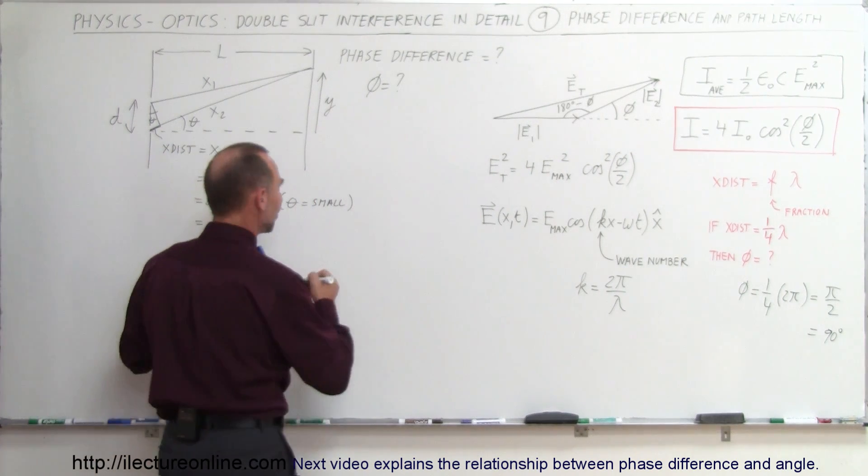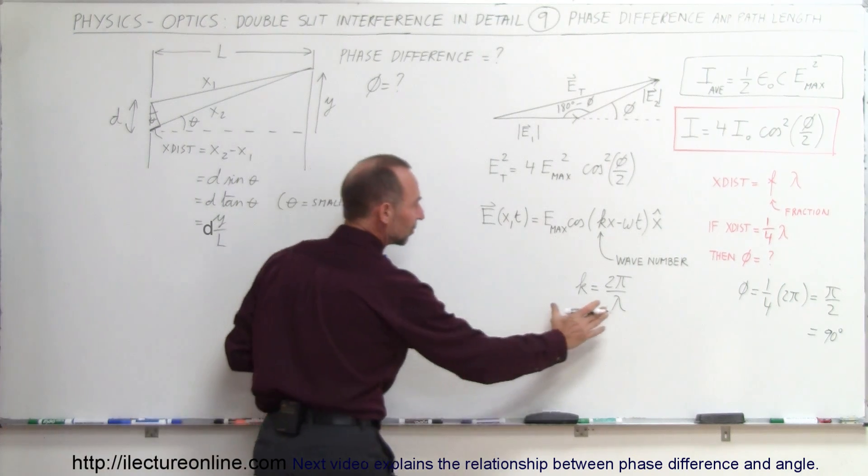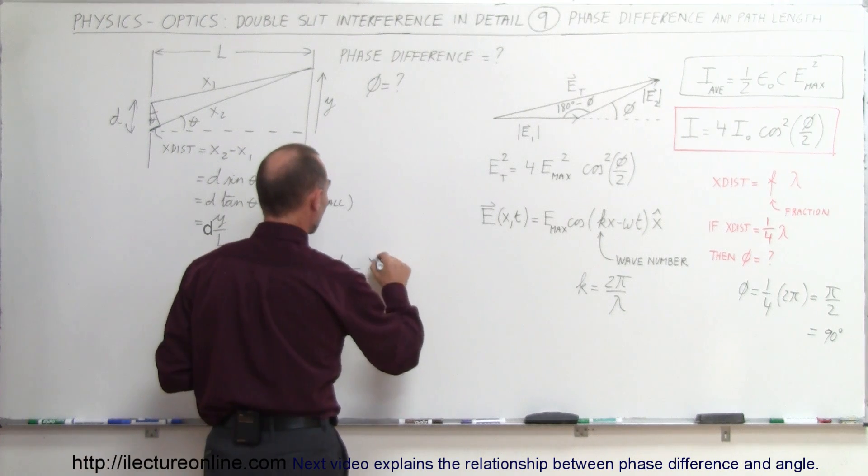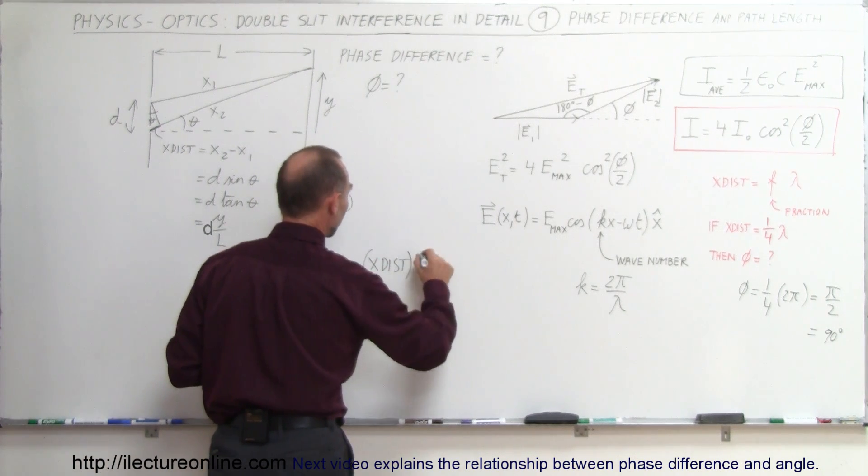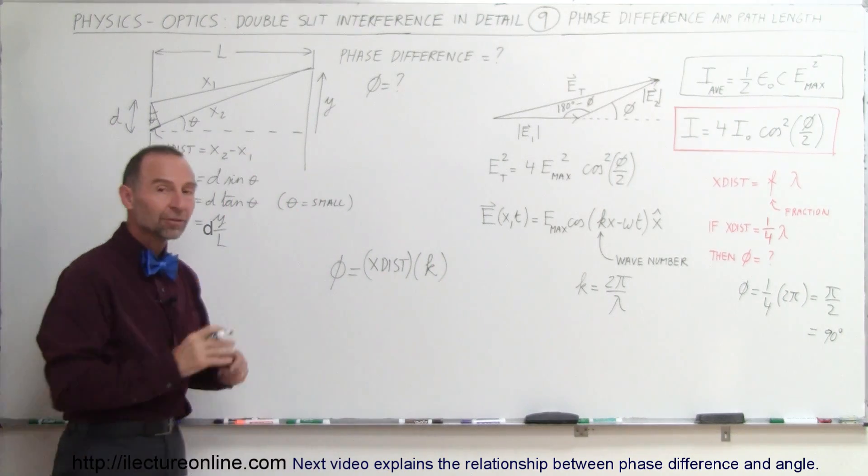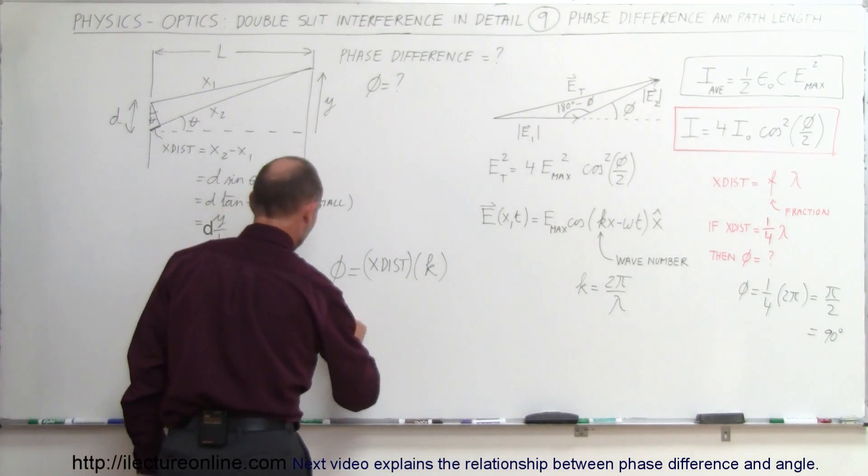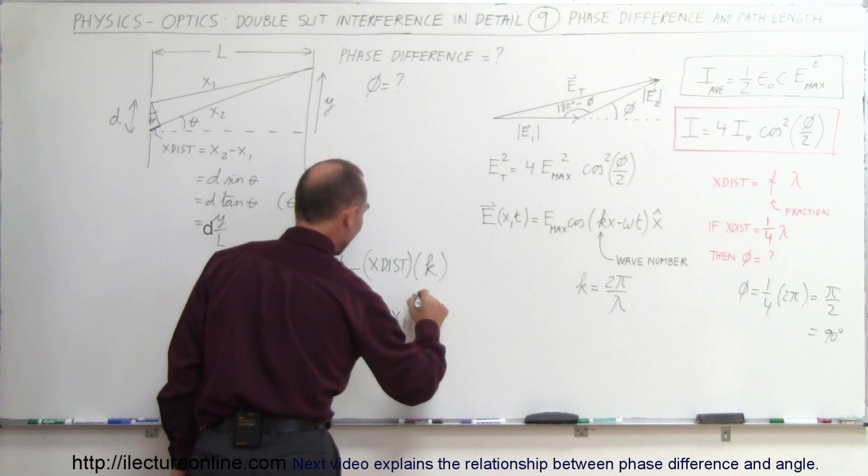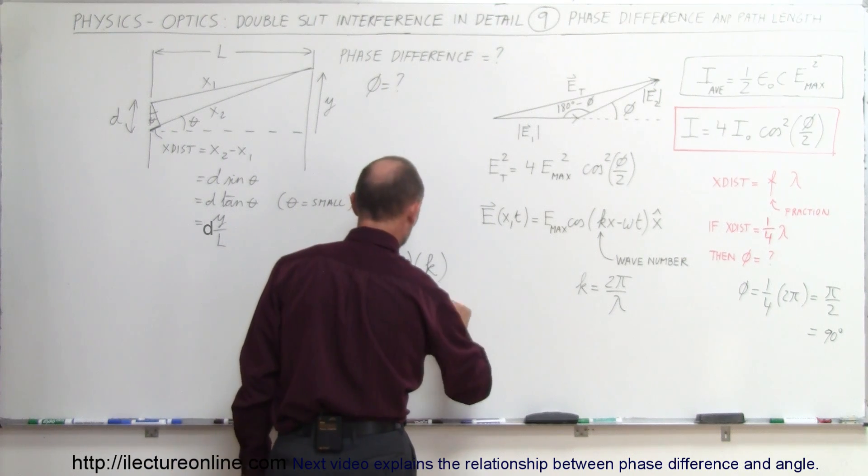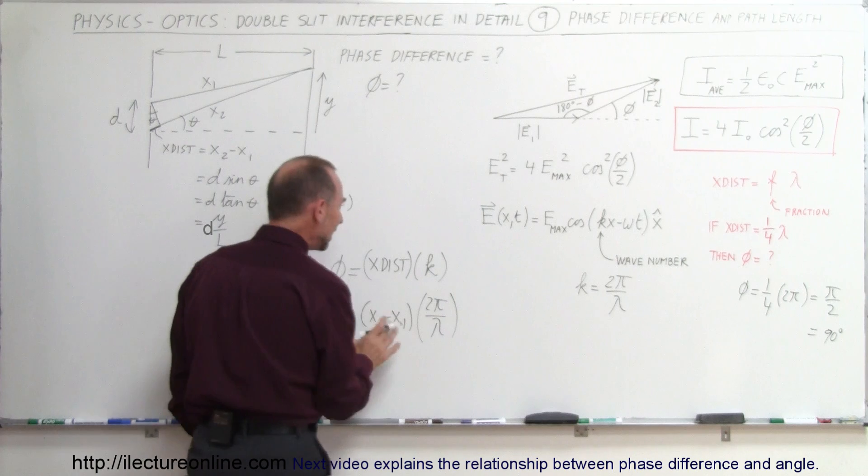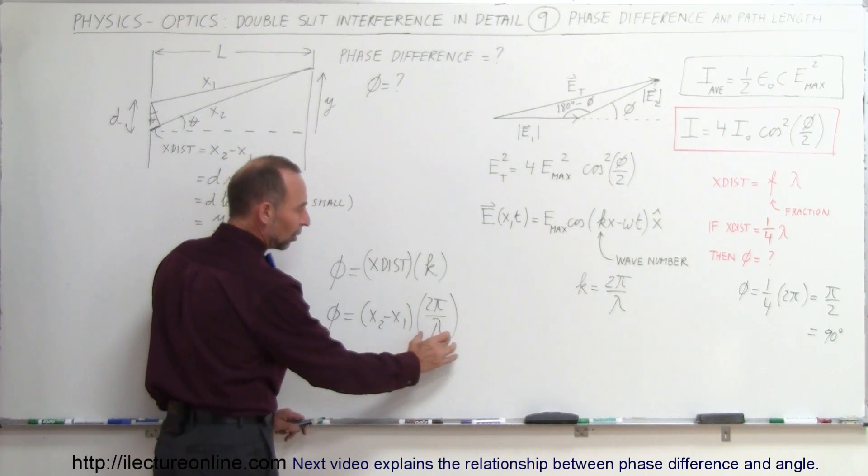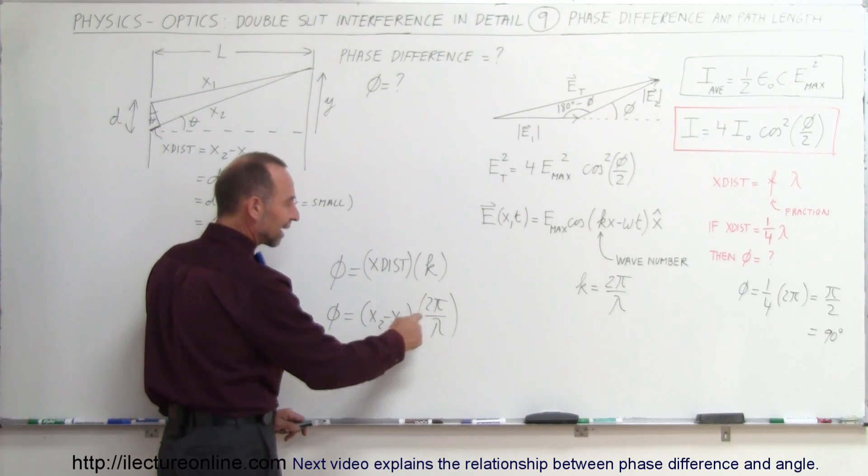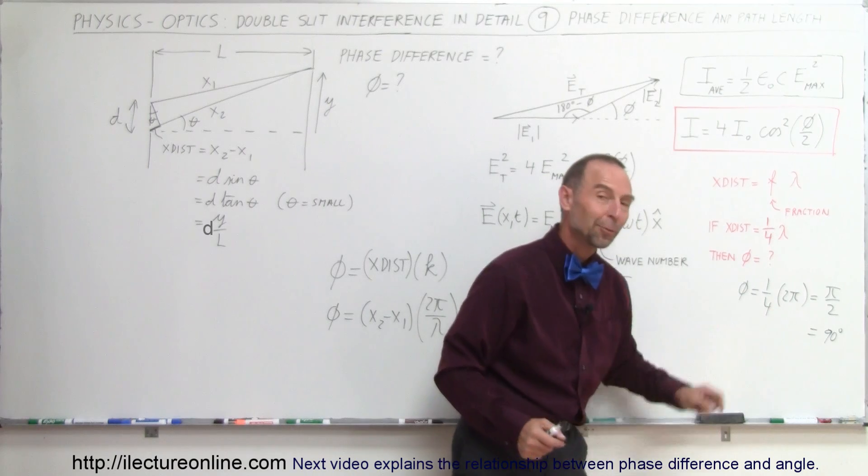How do we find the phase difference using the concept of the wave number? It turns out that it's actually the extra distance traveled multiplied times the wave number. That will give us the phase difference of the waves. Phi equals the extra distance traveled, which is simply x2 minus x1, times the wave number, which is 2π over lambda. What it really comes down to is the fraction of the wavelength times 2π, which is the exact same equation that we have over there.